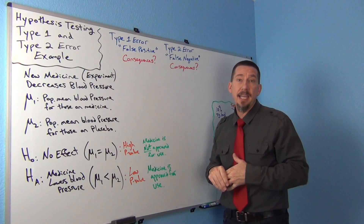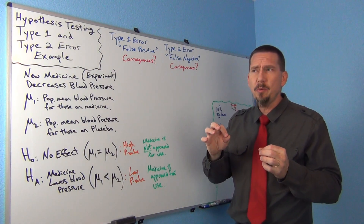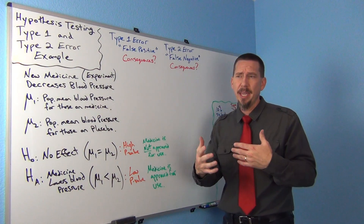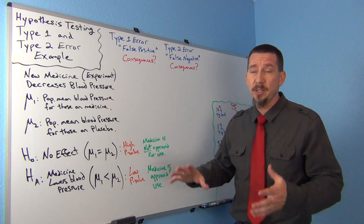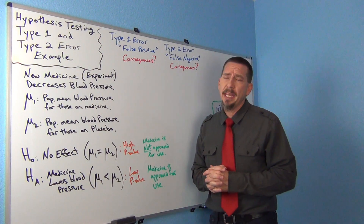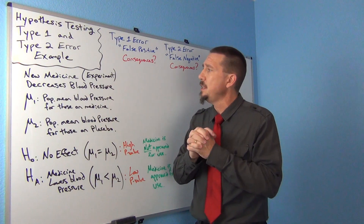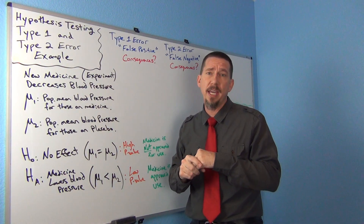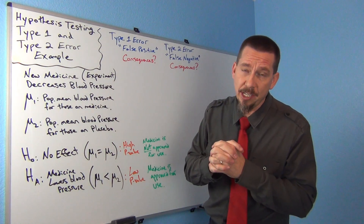Let's look at an example and think about what the recommendation would be — what the statistician would want to recommend to deal with the situation. Every situation is different. So let's suppose we're doing a medication experiment. We want to prove that there's a new medicine — maybe a blood pressure medicine that decreases blood pressure. The goal of this medicine is to decrease blood pressure.